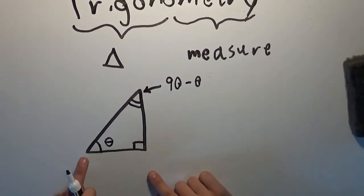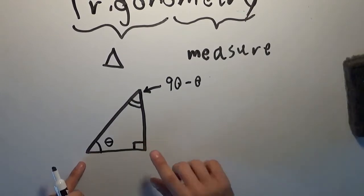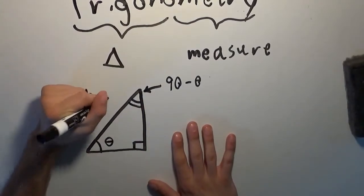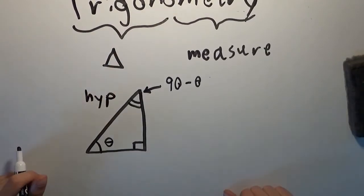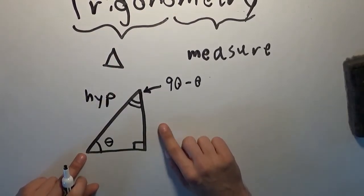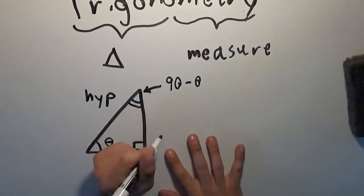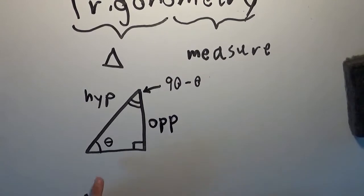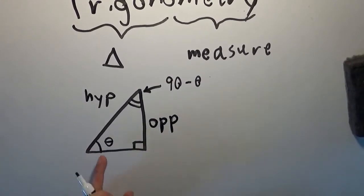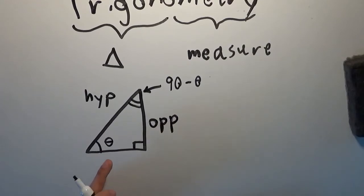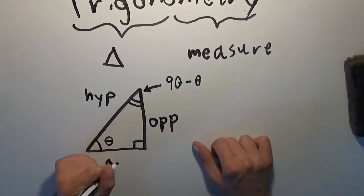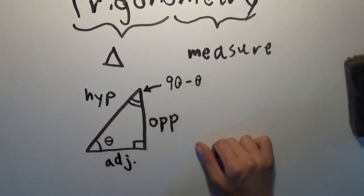We're going to do everything from the perspective of this angle. No matter which angle we pick, the side across from the right angle is always called the hypotenuse — we'll abbreviate that HYP. The side across from the angle we've chosen is called the opposite side — we'll abbreviate that OPP. And the one next to the angle we've chosen — we'll use the word adjacent rather than next — we'll abbreviate that ADJ.